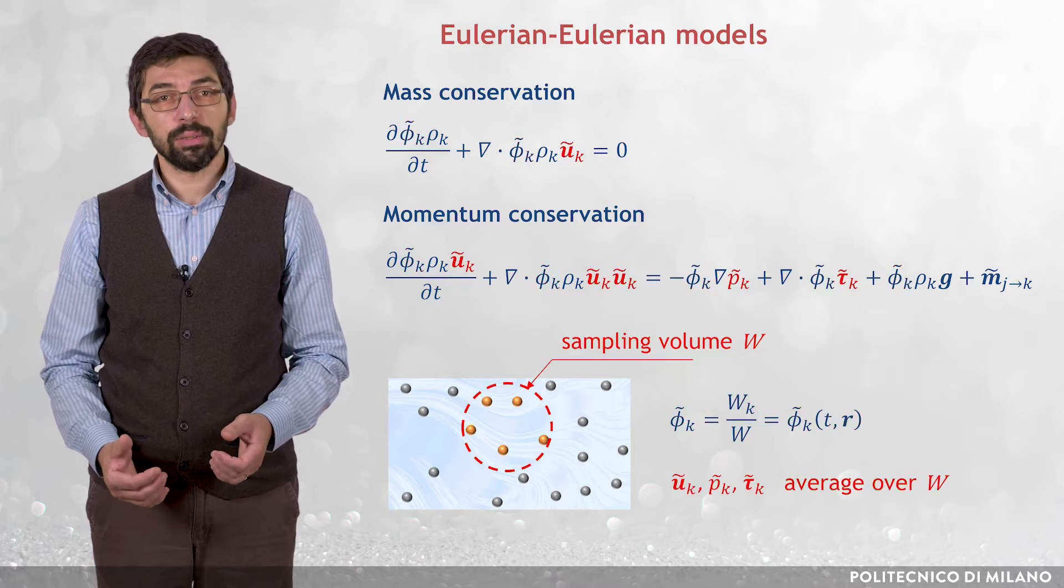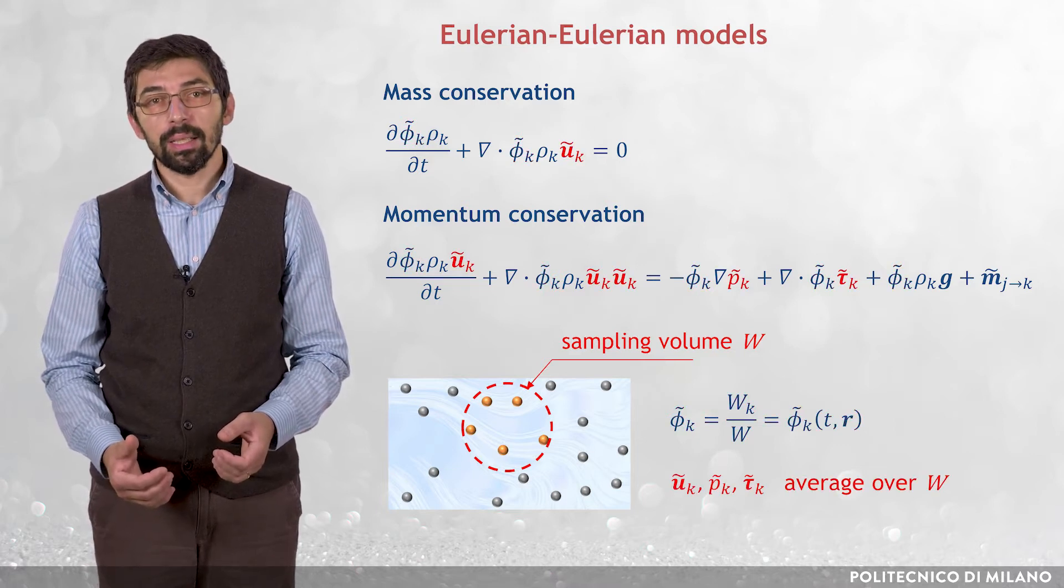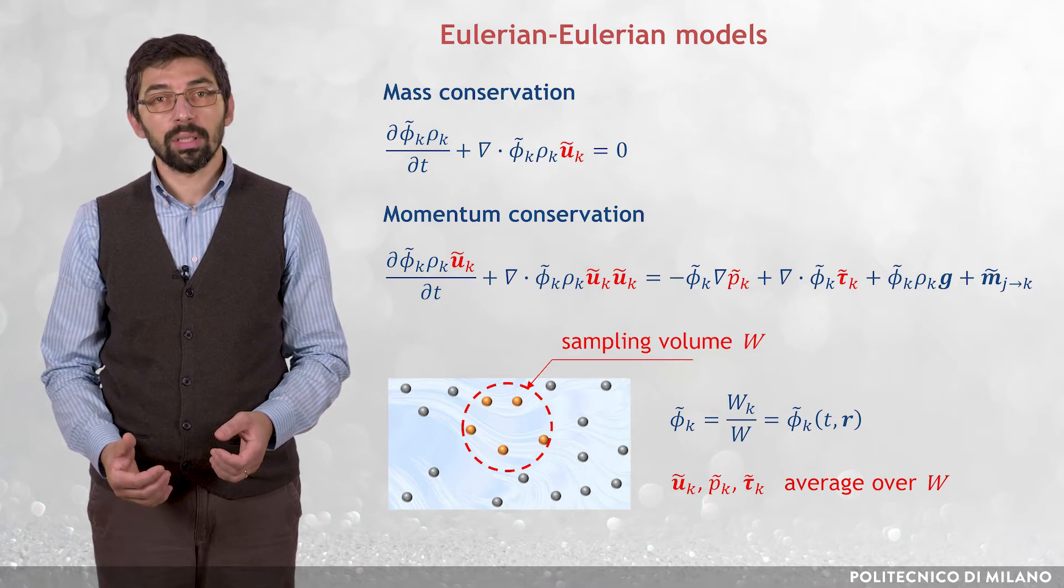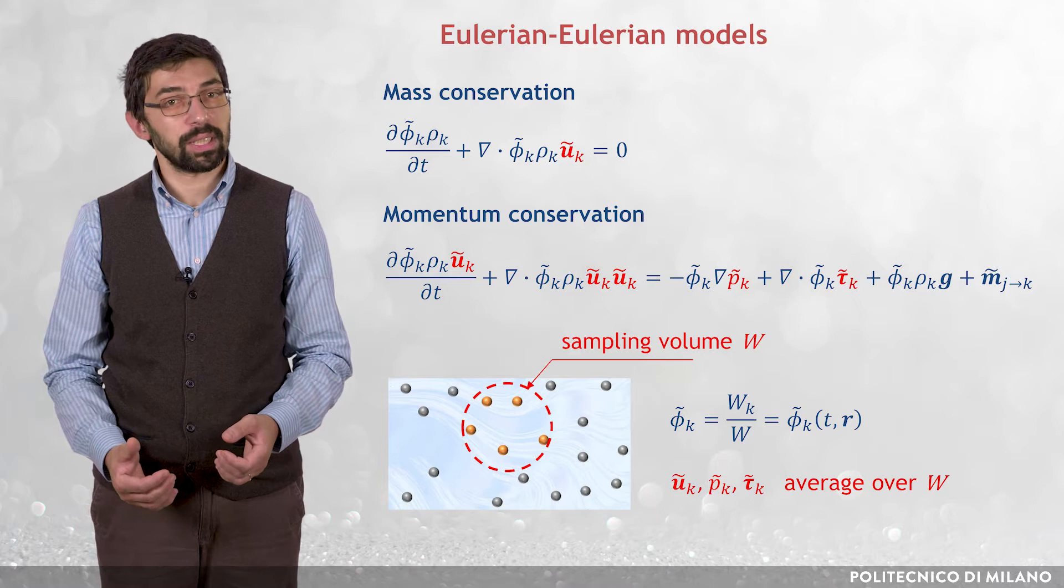Similarly, tilde u_k, tilde p_k, and tilde tau k can be interpreted as the volume average of a velocity vector, pressure, and deviatoric stress tensor of phase k.